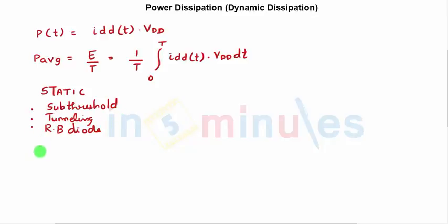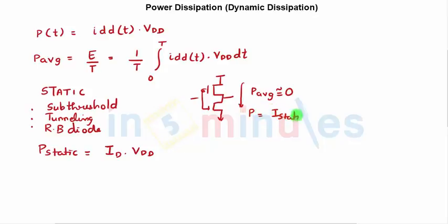We went ahead and saw that P_static technically would be nothing but I_D times V_DD. But we found out from our previous clips that there was no direct path from V_DD to ground because at one point of time only one of my transistors was operating. So this average power under quiescent condition was approximately equal to 0.